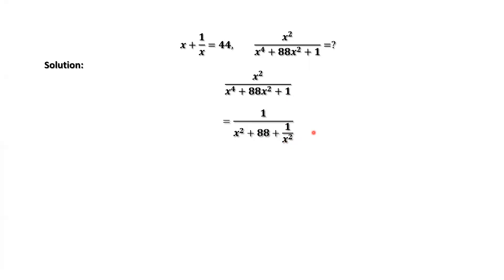Regroup the denominator. We have x squared plus 2 plus 1 over x squared, then plus 86. From here, we can see the constant is 88. Here, 86 plus 2 is 88. This equal sign is true.